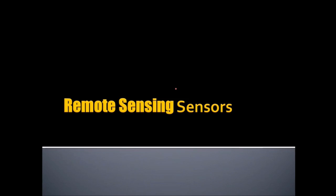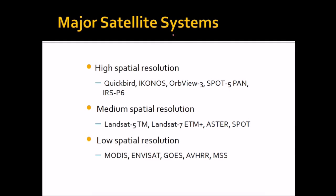We will see various satellites and remote sensing sensors. Major satellite systems include high spatial resolution satellites which are widely used: QuickBird, IKONOS, ArcView, SPOT5, SPOT5 PAN, and IRS P6. For medium spatial resolution, we have Landsat 5 TM, Landsat 7 ETM+, ASTER, and SPAR.